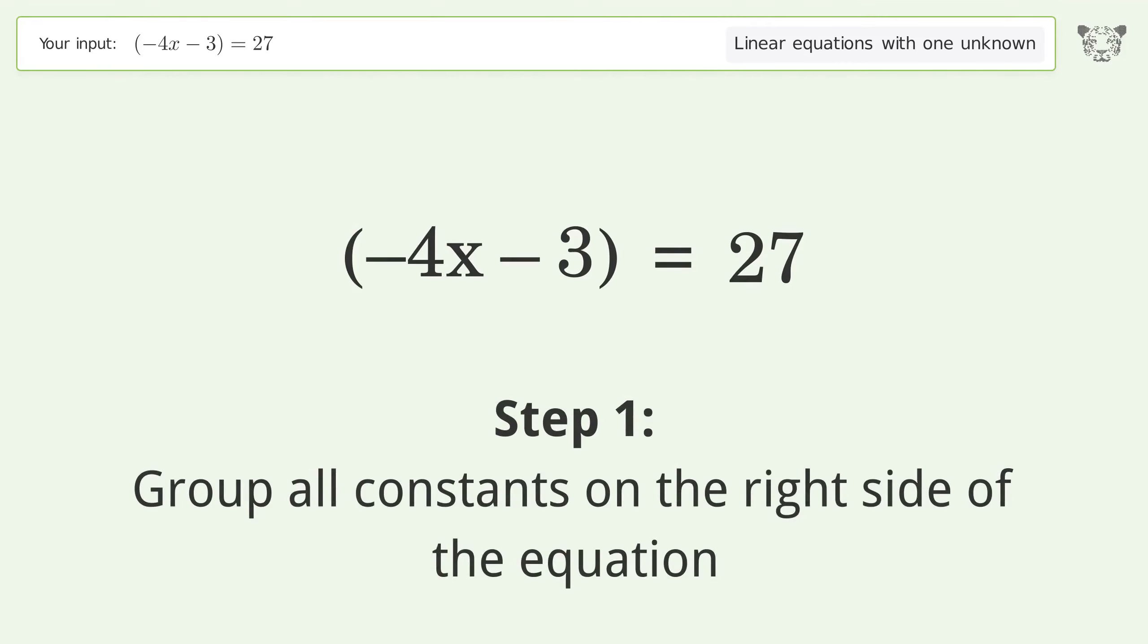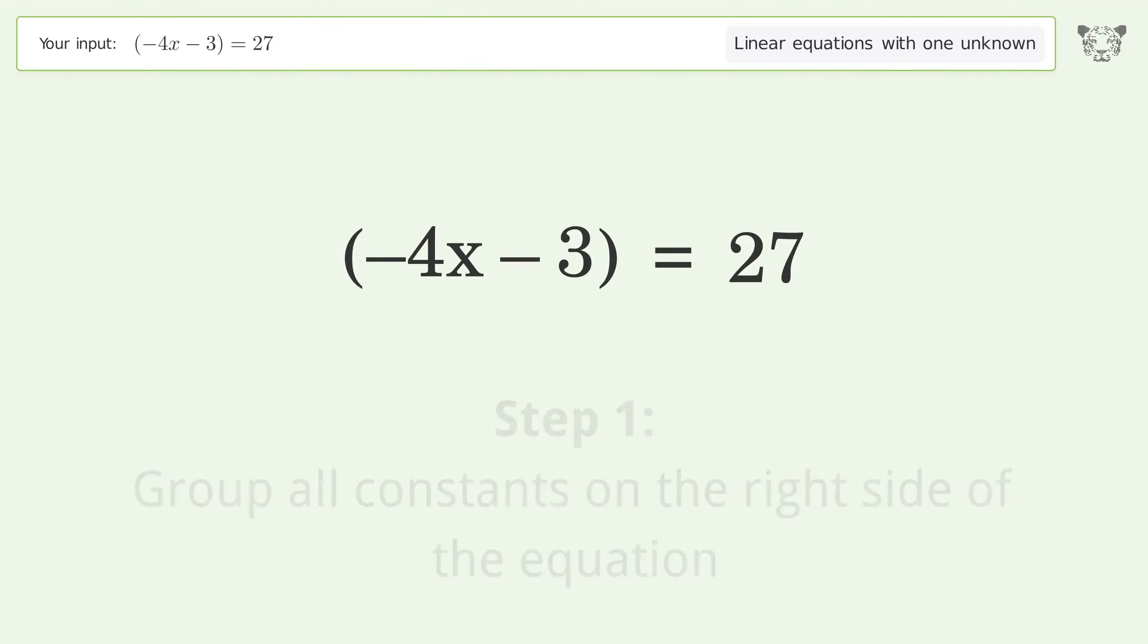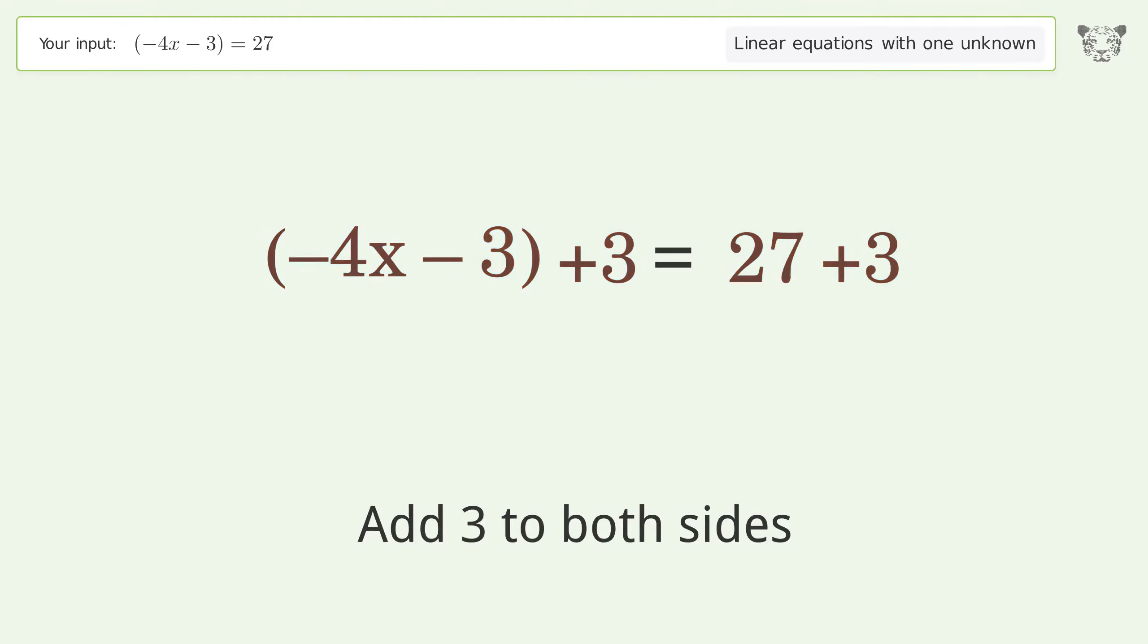Group all constants on the right side of the equation. Add 3 to both sides. Simplify the arithmetic.